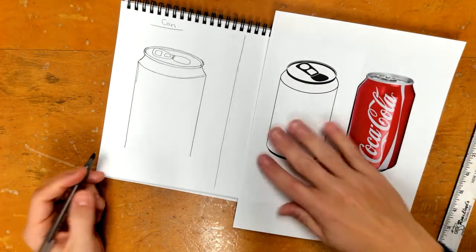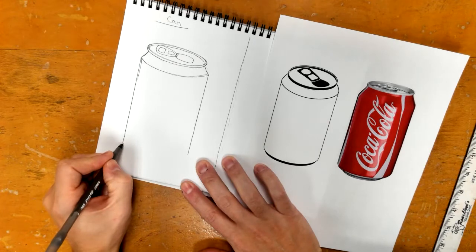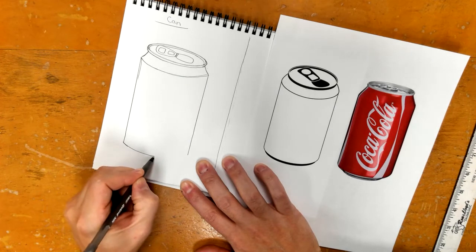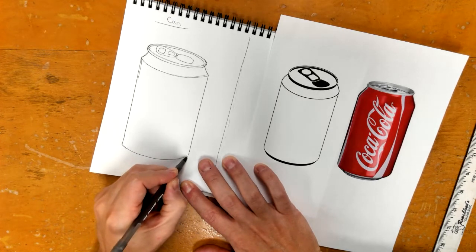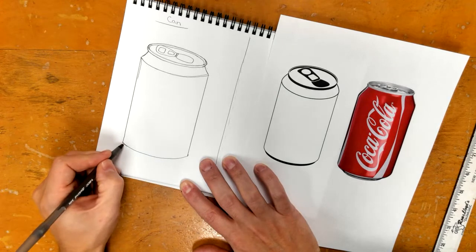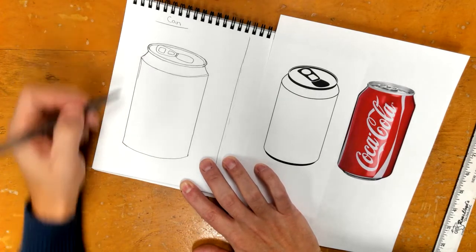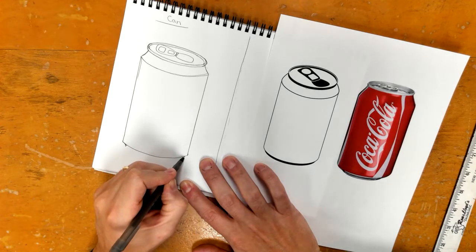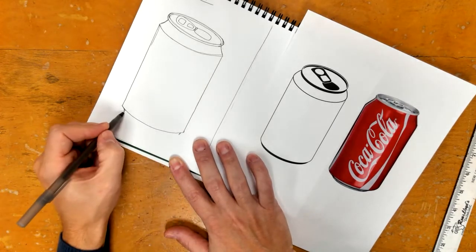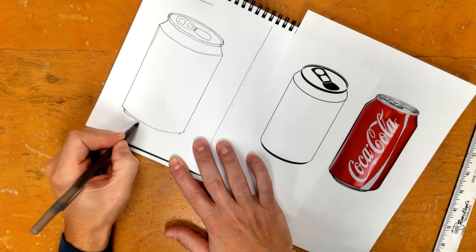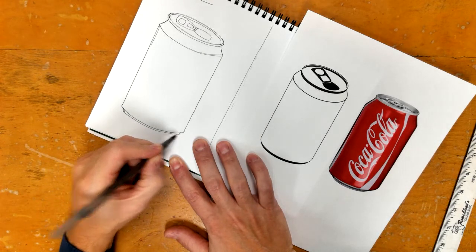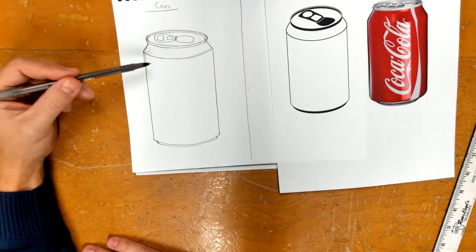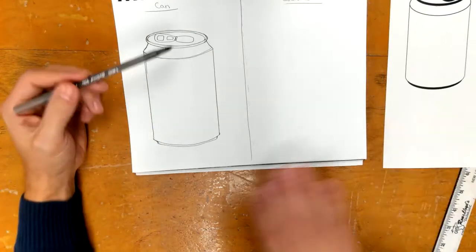So now I have that. Now I need to match the curve of this line right here. Come down, curve up, and then basically how this got smaller down here it needs to do the same thing. So we put a little curve there and then we just match it. And now you have your soda can.